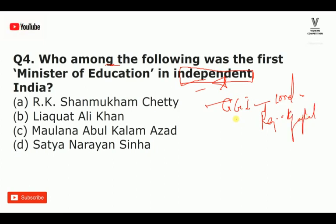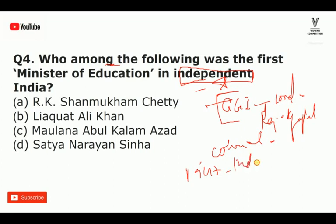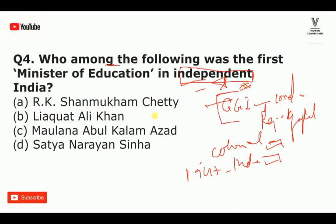This is an important difference. When the British Raj was in charge, it was colonial India. When the government changed in 1947, it became independent India. The governor general post existed in colonial India and post-independence. If the question asks about independent India and options include Lord Mountbatten and Rajagopalachari, then for independent India it is Rajagopalachari, and for British colonial India it is Lord Mountbatten.